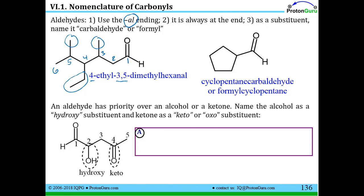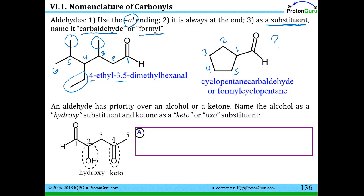A complication arises when the aldehyde is not on the parent chain itself, as in a cyclic structure. When the aldehyde carbon is not part of the ring, the parent chain is the ring and the aldehyde is named as a substituent. When named as a substituent, the aldehyde is called 'carbaldehyde' or 'formyl.' So a cyclopentane ring with an aldehyde substituent can be named either cyclopentane carbaldehyde or formyl cyclopentane.